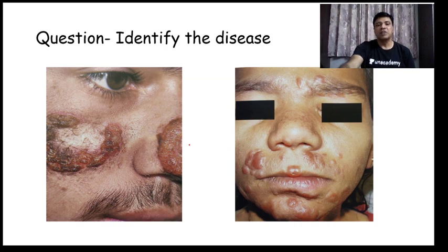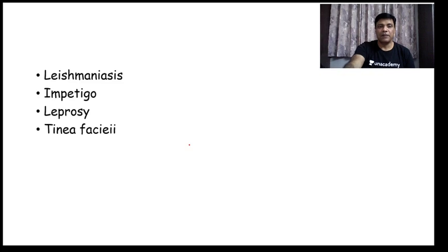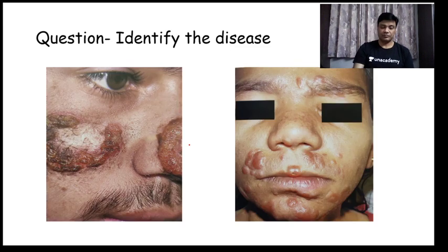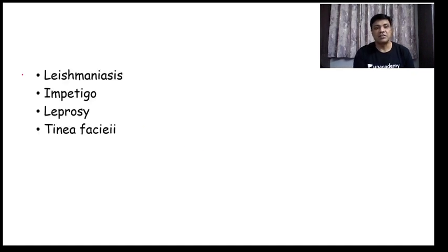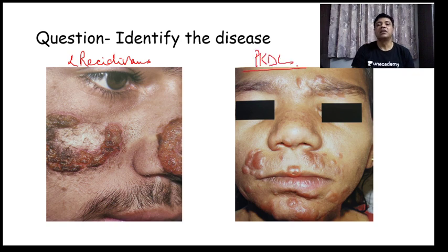Next question: identify the disorder. Two clinical photographs of a spectrum of disease are shown. Choices are Leishmaniasis, impetigo, leprosy, and Tinea faciei. The correct answer is Leishmaniasis. The first photograph is Leishmaniasis recidivans and the second is Post-Kala-azar Dermal Leishmaniasis — two clinical photographs of a spectrum caused by the same organism, Leishmania.